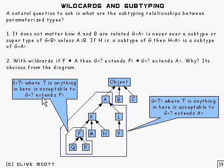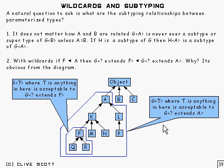We've got G of something which extends F — so what's acceptable to that? Well, G of T, where T is anything in this box here, is acceptable to it. Now if we look at G of something which extends A, then the types acceptable to that will be anything within this larger box.